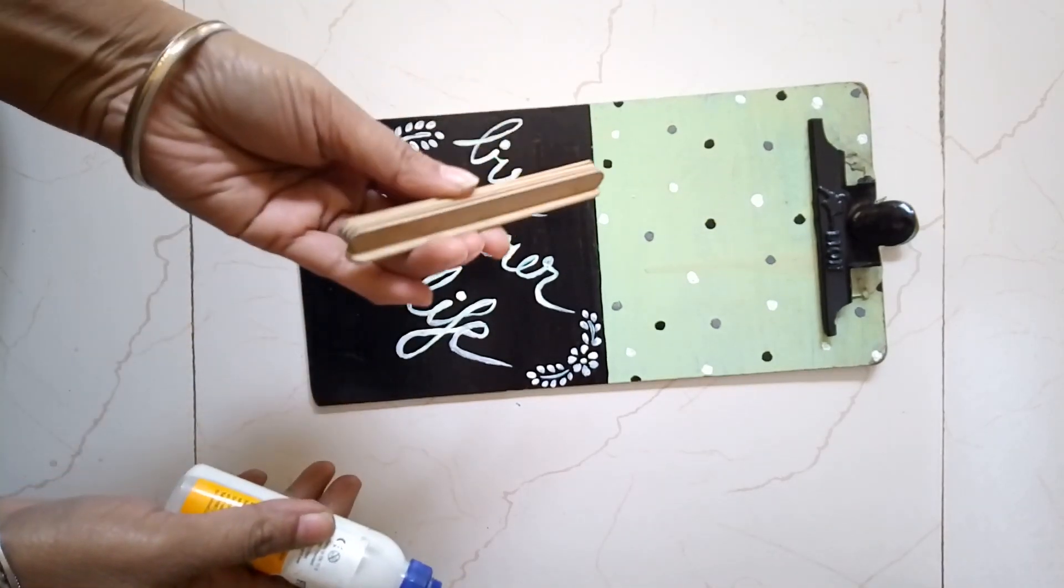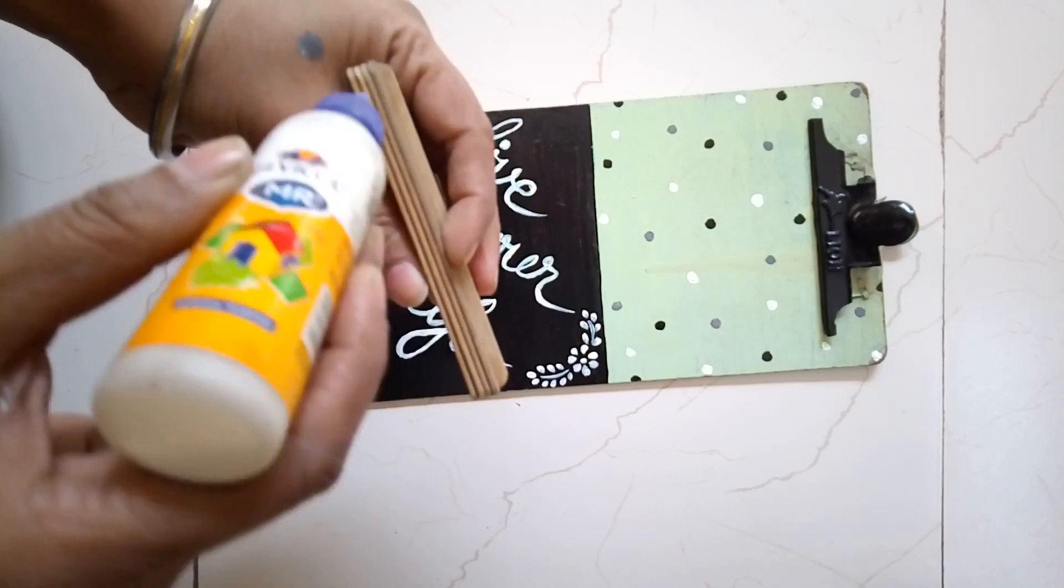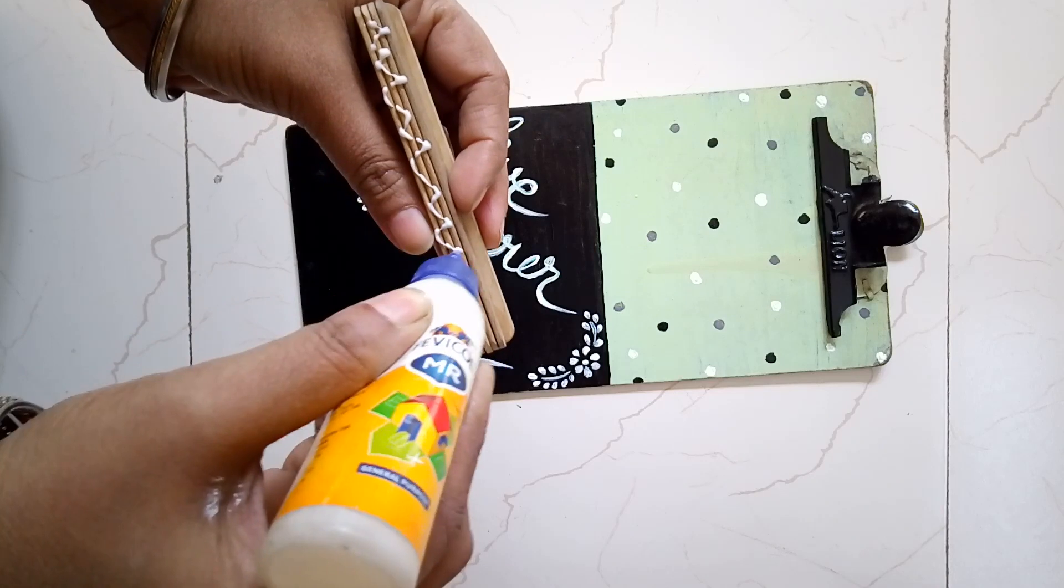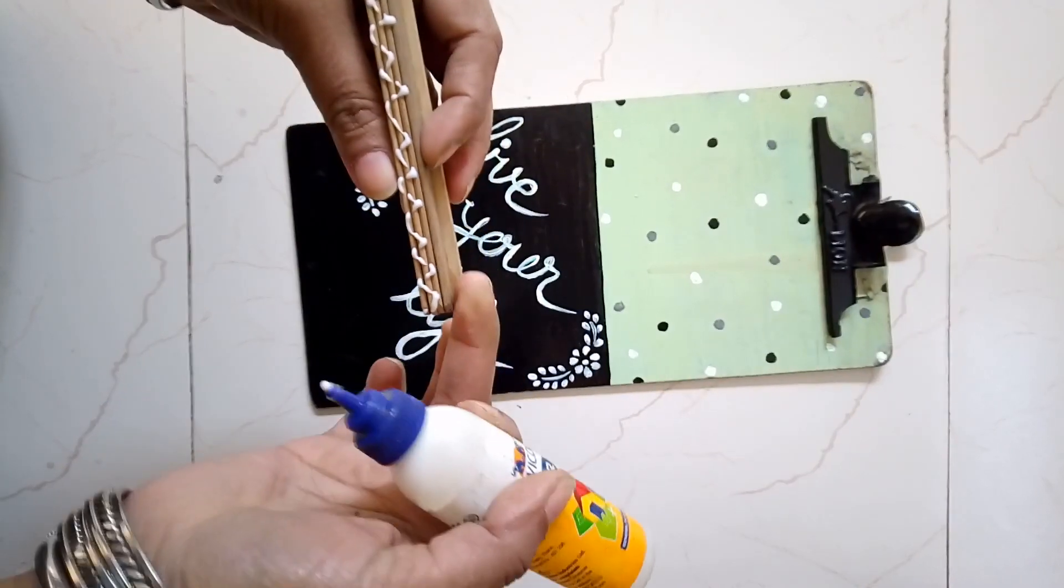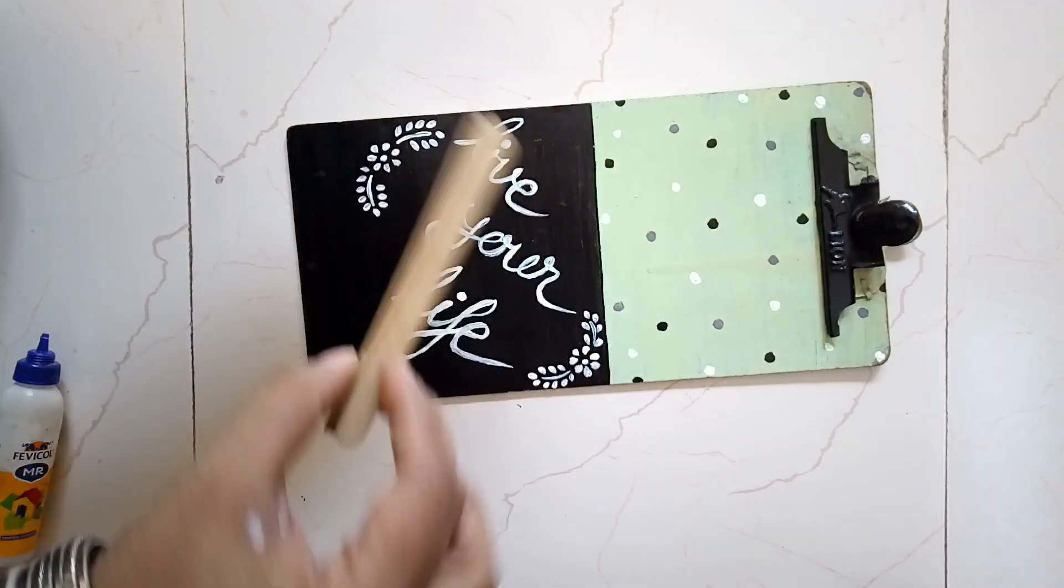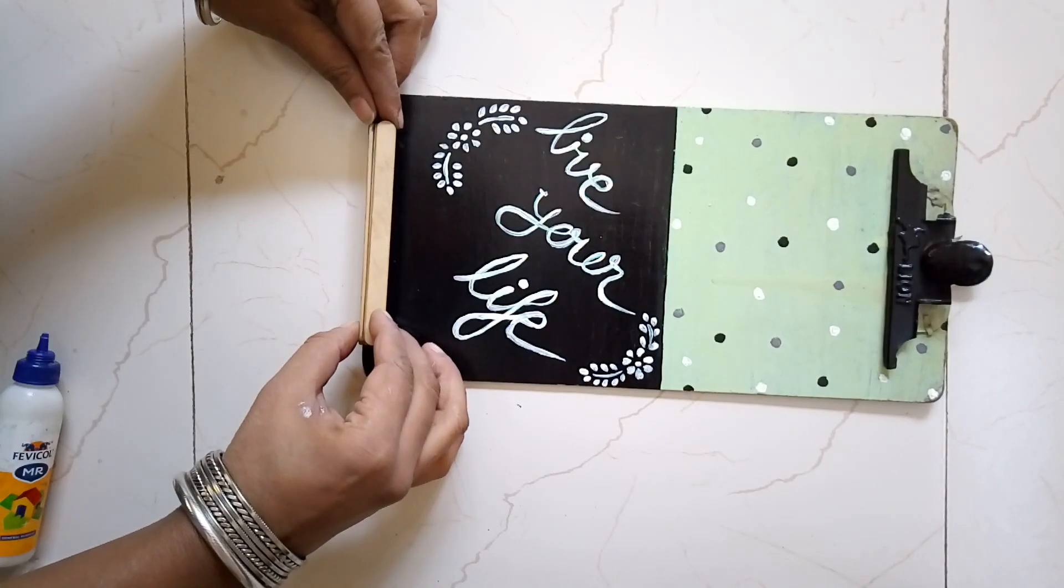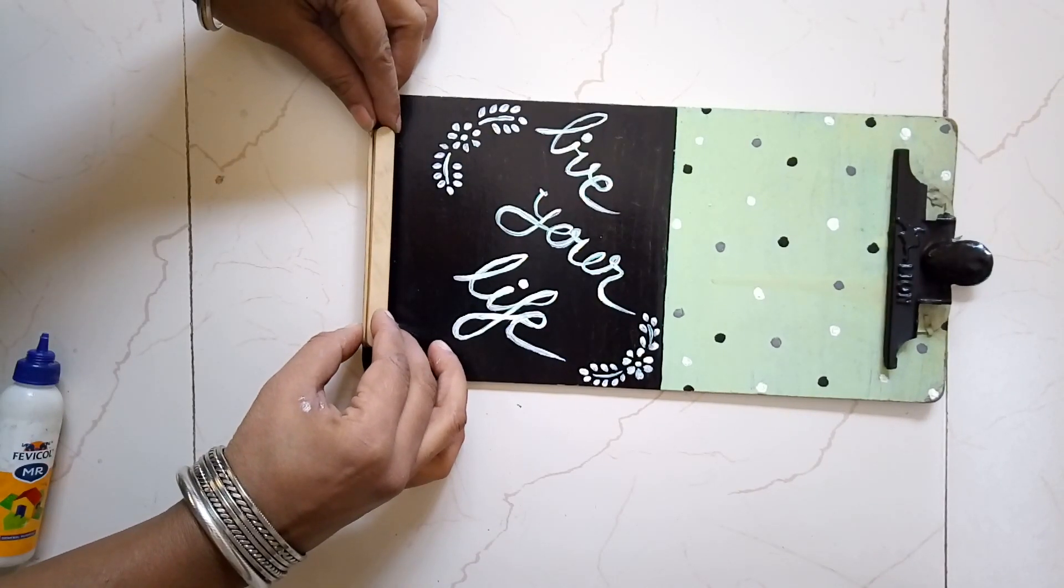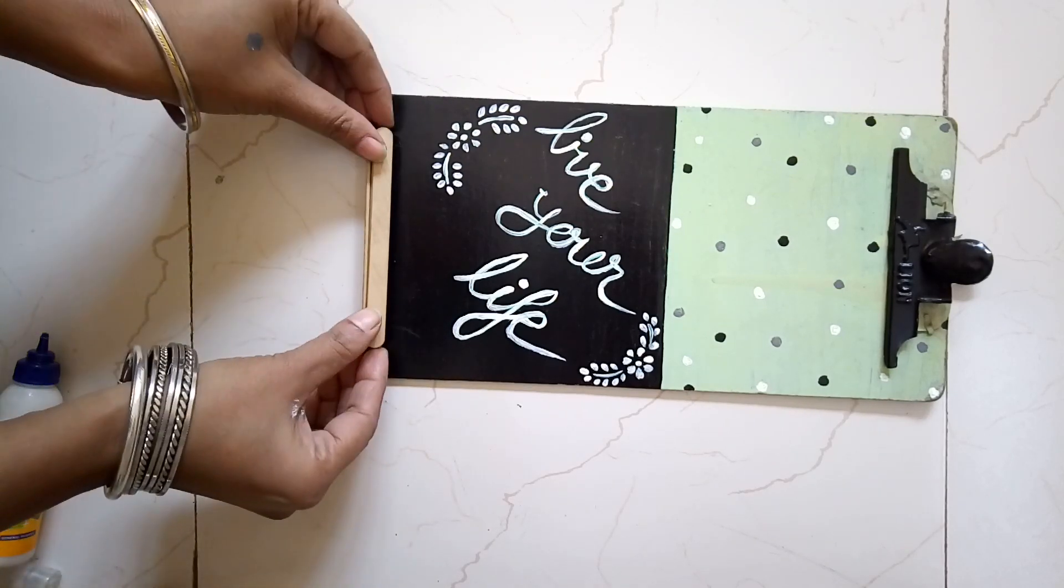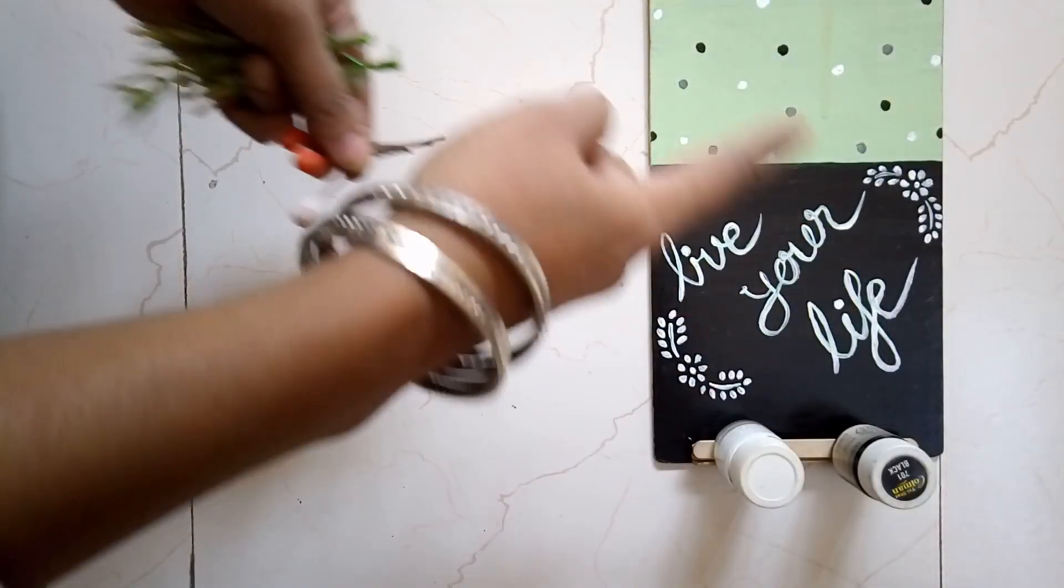Now the board is dry and the popsicle sticks are dry and I'm going to put some more glue on this side. Not on the overhanging side, the other side. I'm going to stick it onto the bottom part of the board, just a little above the bottom and roughly in the center. Press it tight and let this dry.